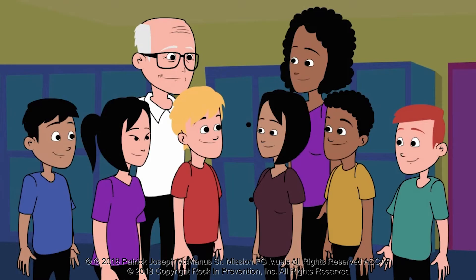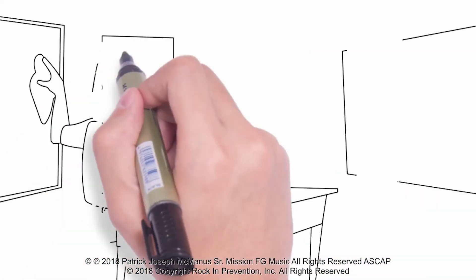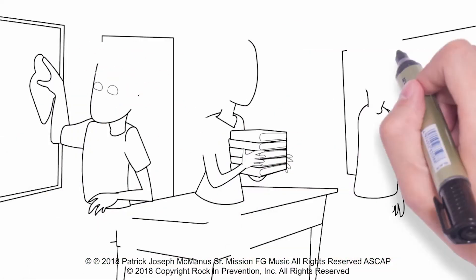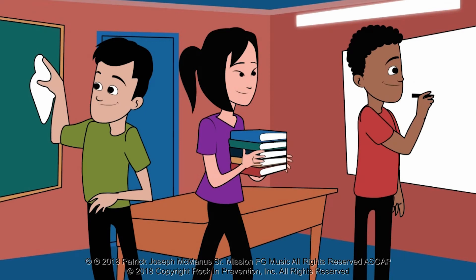Effective bullying prevention needs everyone to buy in. Friends, peers, teachers, counselors, principal and parents. If we can get the majority of people to work on creating a caring community at our school, it will happen.